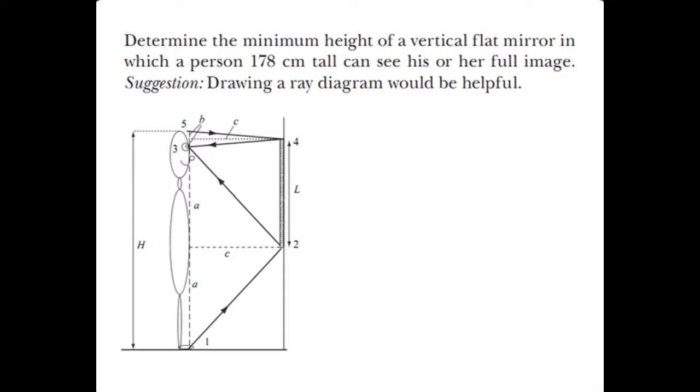The goal is for this person's eyes to be able to detect a ray which originates at the foot and a ray that originates at the top of the head. This means that this person can just barely see his entire image.